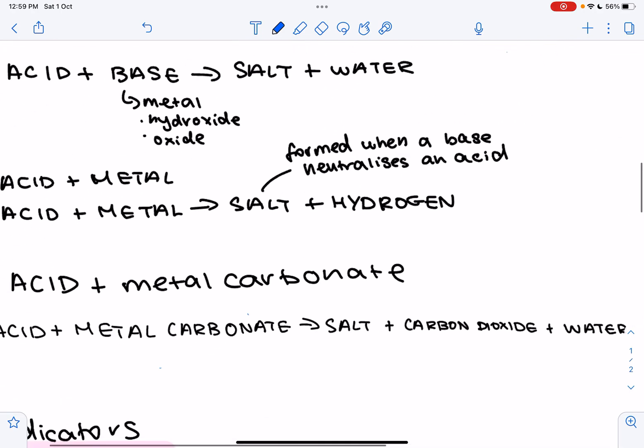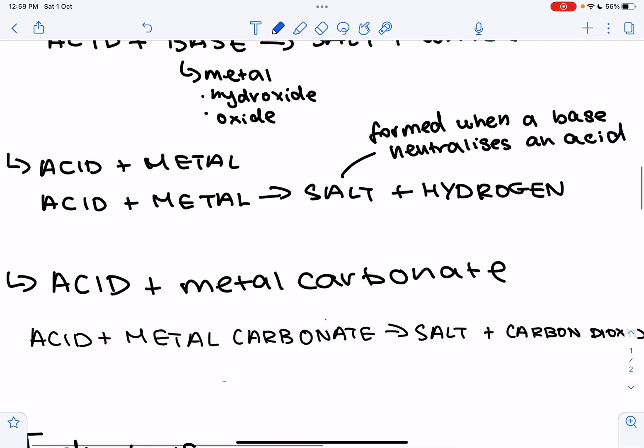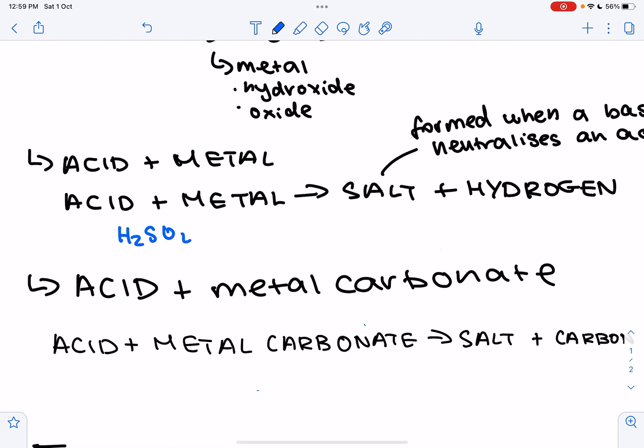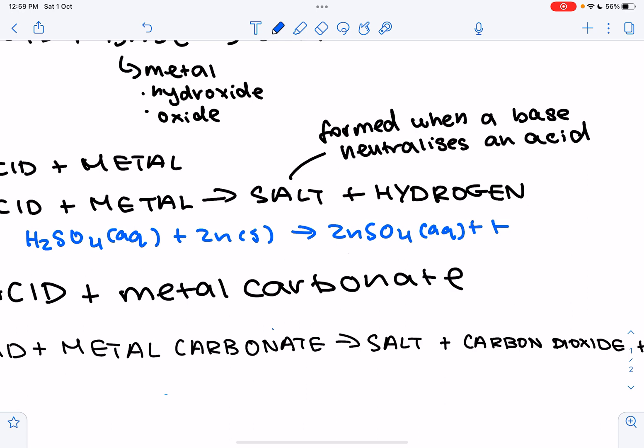Now the second reaction we're going to look at is acid plus metal. So an acid plus metal would give salt and hydrogen gas. Some observations here would be that the solid dissolves, disappears, the temperature increases, and that there may be bubbling and fizzing. Example here would be H2SO4 plus zinc metal gives you zinc SO4, so zinc sulfate plus hydrogen gas.